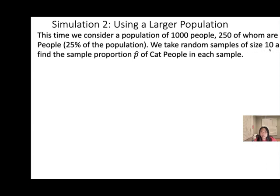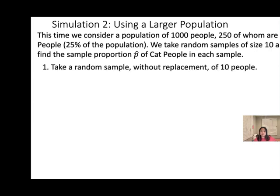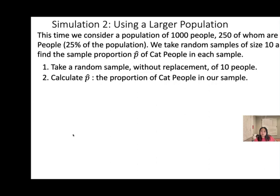So this is Simulation 2 — a similar experiment where we just increase the population size and the sample size. We take a sample without replacement of 10 from these 1,000 people. Without replacement means you don't put them back: pick one person, set them aside; pick a second person, set them aside; until you have 10 people. Then we calculate the sample proportion of cat people.